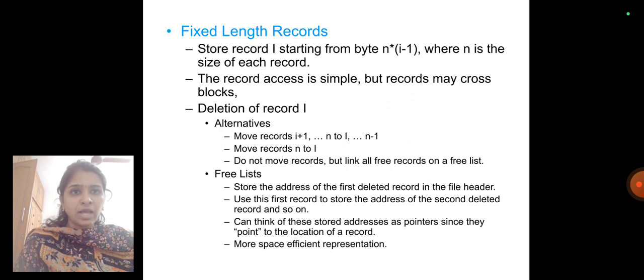Deletion of record i - alternatives: move records i+1 up to n to i up to n-1; move records n to i; or do not move records but link all free records on a free list.